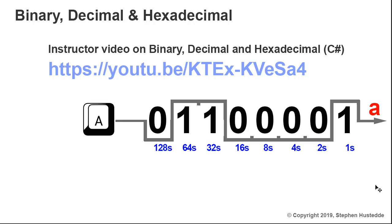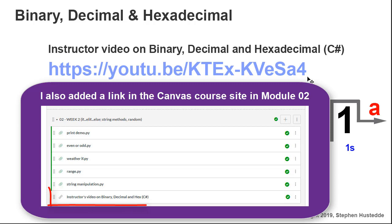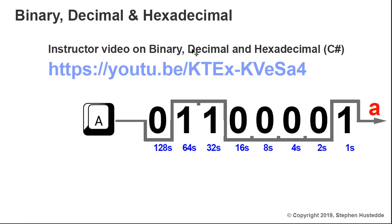Of course, you have to know a little about binary, decimal, and hexadecimal. I did create a video for my C-sharp students that walks through binary, decimal, and hexadecimal numbering systems. Here is the shortcut to that video. I invite you to watch it if you do not know how to convert between those using just paper and pencil, because we need to be able to convert between those in order to write a program to do it for us.